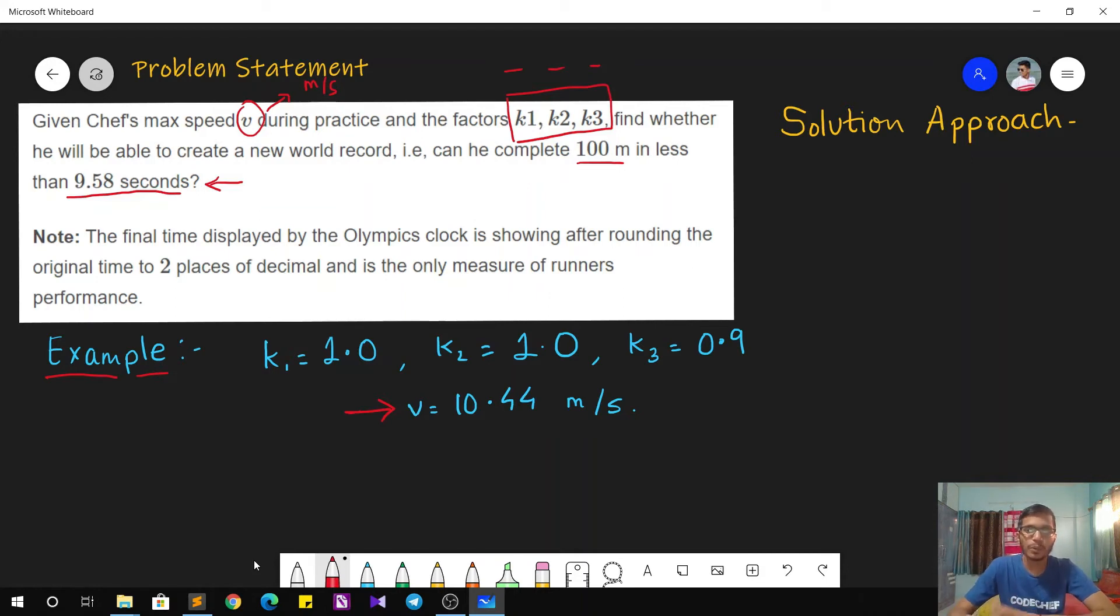So the solution approach is pretty simple. We'll understand using the same example that we have over here. First of all, we need to find the speed of Chef in the actual race. It depends on all these four things: the maximum speed V and K1, K2, K3.